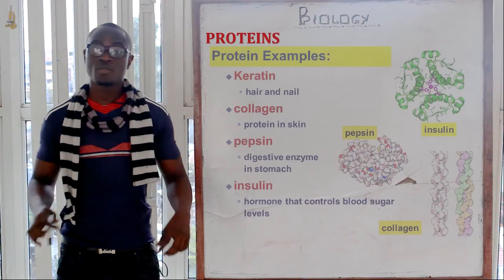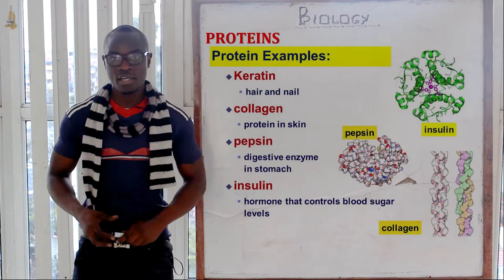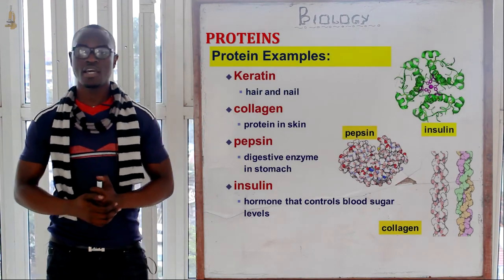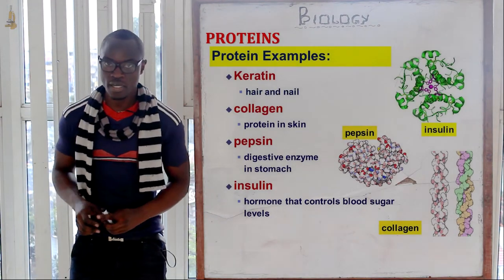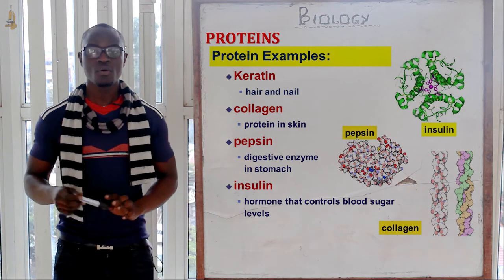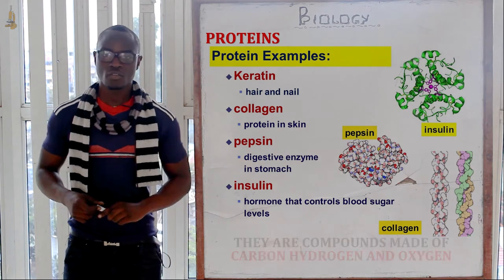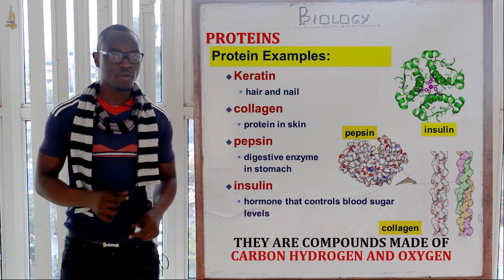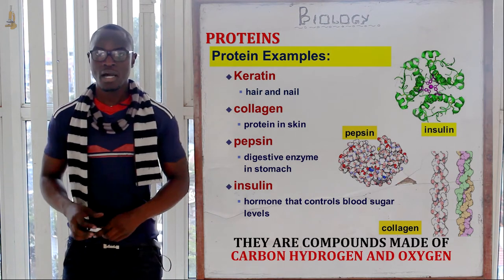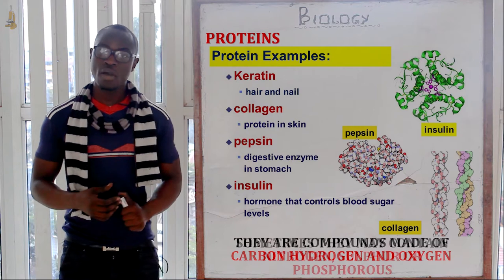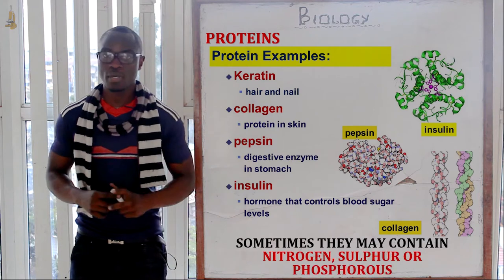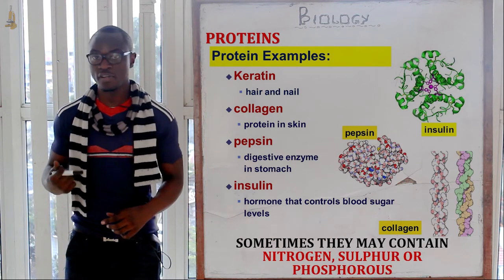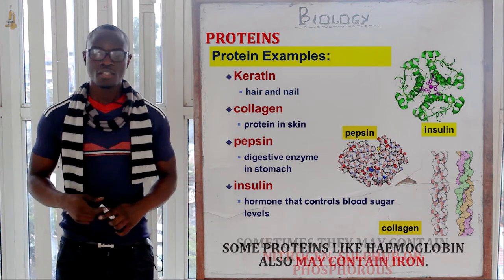Welcome to this class where today we will discuss proteins, then go into enzymes. Proteins are compounds mainly made up of carbon, hydrogen, and oxygen, whereby some proteins may also have nitrogen, phosphorus, or even sulfur.